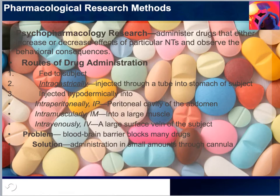Another selective neurotoxin that has been widely used is 6-OHDA. Just know that it is taken up by only those neurons that release the neurotransmitter norepinephrine or dopamine, and it leaves other neurons at the injection site undamaged.